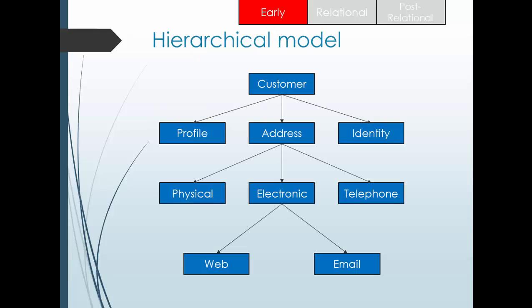In the hierarchical model, there is always a parent-child relationship. Consider this model where a customer has a profile (first name, last name, age, gender), an address (physical, electronic, or telephone), and an identity. The customer is the parent for the profile, address, and identity tables, while address is the parent for the physical, electronic, and telephone tables. Profile, address, and identity are children of customer.